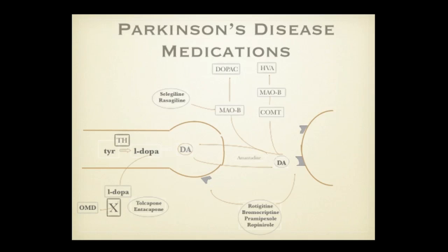We have levodopa — it's a precursor. Tyrosine hydroxylase is the rate-limiting enzyme in dopaminergic neurons, and there aren't enough of them because many neurons are dying. So you go downstream of that and give levodopa, which converts to dopamine by a decarboxylase, and you increase transmission that way.